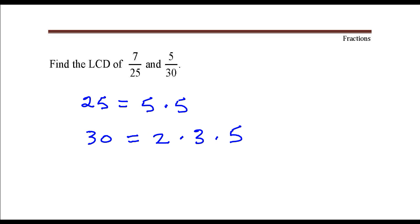Now your factors are 2, 3, and 5. The greatest number of times that a 2 occurs is right here, just once.